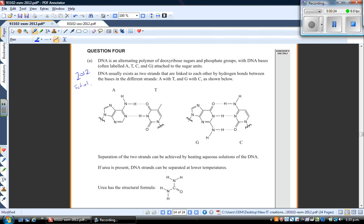DNA usually exists as two strands that are linked to each other by hydrogen bonds between the bases in the different strands. A bonds with T and G base pairs with C as shown below. Separation of the two strands can be achieved by heating aqueous solutions of the DNA. And if urea is present, DNA strands can be separated at lower temperatures. So the key chemical idea here, it's all about hydrogen bonding.